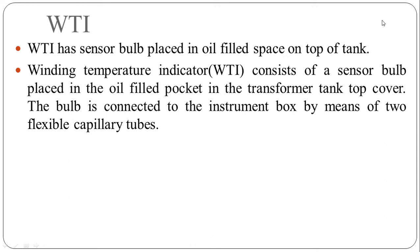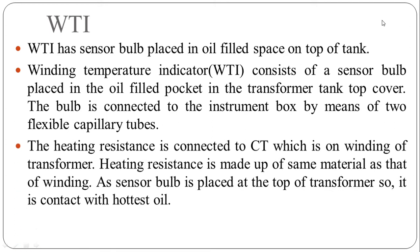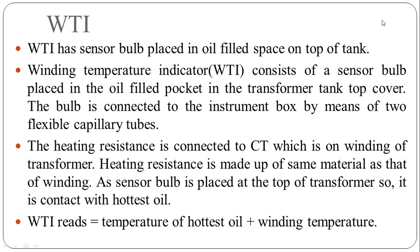The bulb is connected to the instrument box by means of two flexible capillary tubes. The heating resistance is connected to CT which is on winding of transformer. Heating resistance is made up of same material as that of winding. A sensor bulb is placed at the top of transformer so it is in contact with hottest oil in the transformer. The winding temperature indicator reads the temperature of hottest oil and winding temperature.